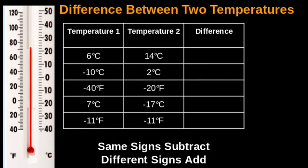We have a table of temperatures here, and we're going to find the difference for each pair of temperatures given. There are two ways you can go about this. You can use a thermometer to find the difference between two temperatures, or you can use a calculation-based method, which we'll go into shortly.